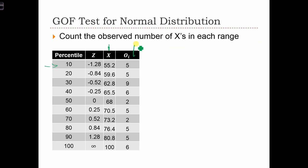So we fill in this table. We had 5 in the first range, 5 in the second range, then we had 9, 6, and so on. Finally, in our last range, it was the range between 80.8 and the maximum score of 100.